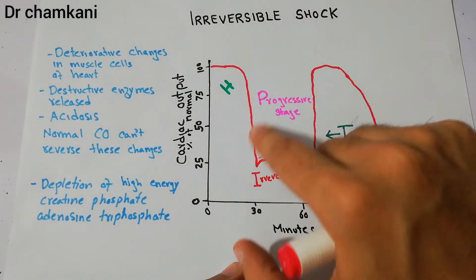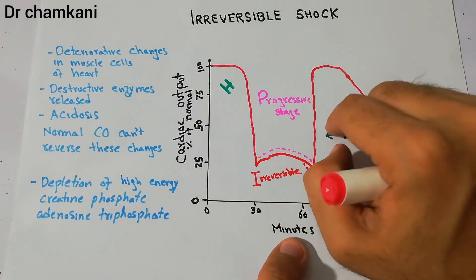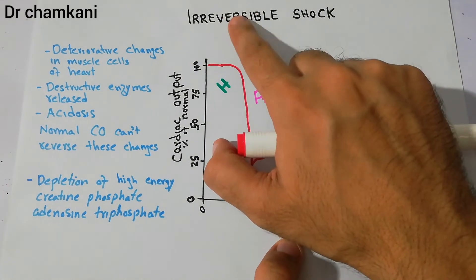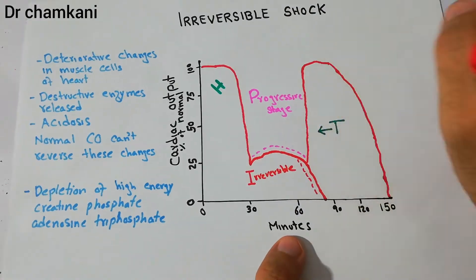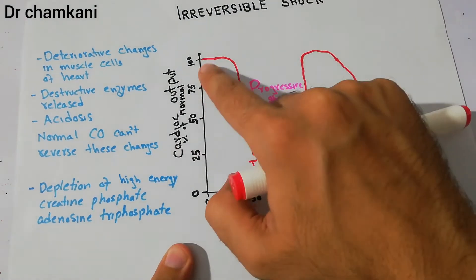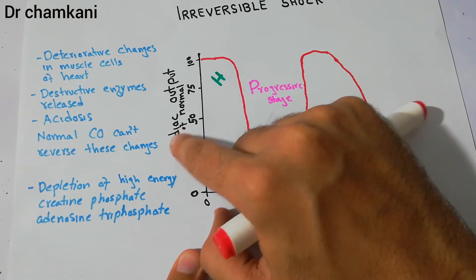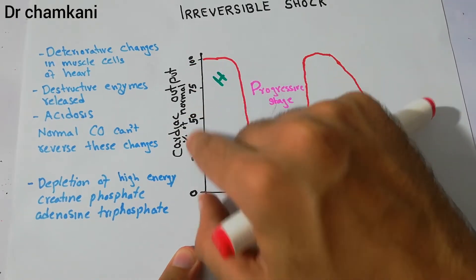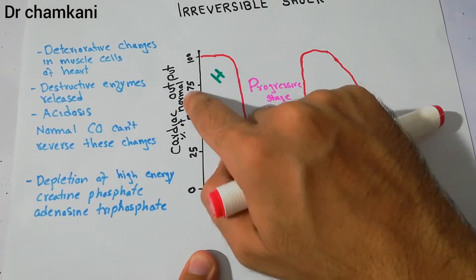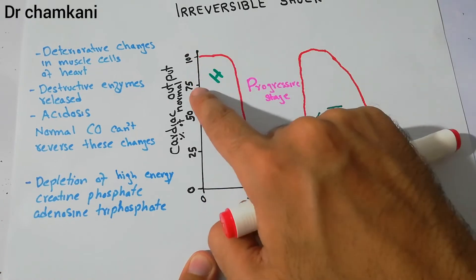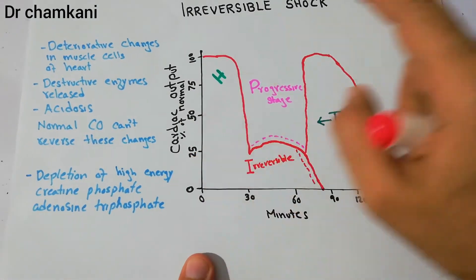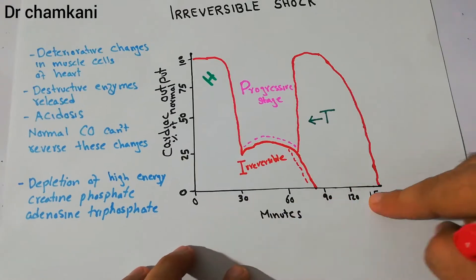With the help of this diagram we are going to demonstrate how, once the progressive stage has been converted into the irreversible stage, treatment won't be helpful. This graph shows cardiac output on the y-axis: 100% of normal, 75%, 50%, and 25% of normal. The x-axis represents time.